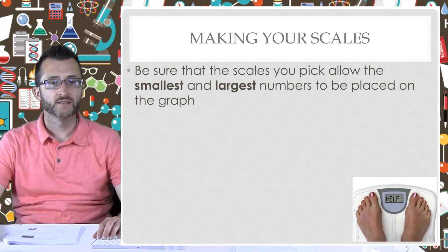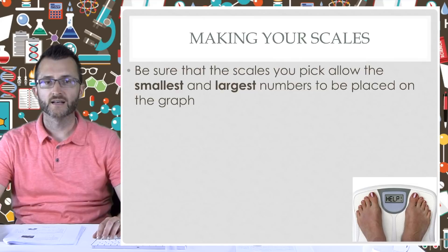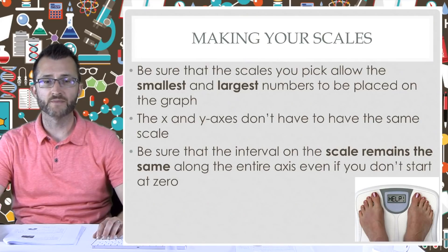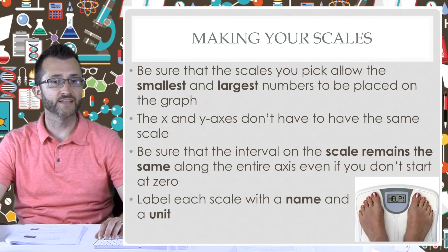Making your scales. Be sure that the scales you pick allow the smallest and largest numbers to be placed on the graph — this should include all data points. The x and y-axis don't have to have the same scale; it is going to depend on the range. Be sure that the interval on the scale remains the same along the entire axis, even if you don't start at zero. To be safe, always label the number values for the x and y-axis at your origin. And finally, label each scale with a name and a unit — don't forget units. Units give meaning to the actual scale.